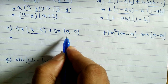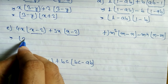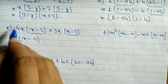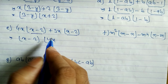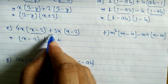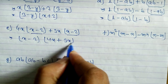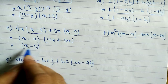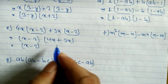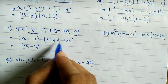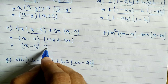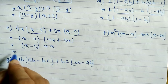Now look at question e. Here is x minus 2, here also x minus 2, so we can write x minus 2 as common. What is remaining: 4x, so we write 4x; here is plus, so plus; what is here is 3x, so 3x. Now x minus 2 we can write as x minus 2 because they are unlike terms we cannot subtract, but 4x plus 3x are like terms, so we can add: 4 plus 3 is 7. So we can write 7x(x minus 2).